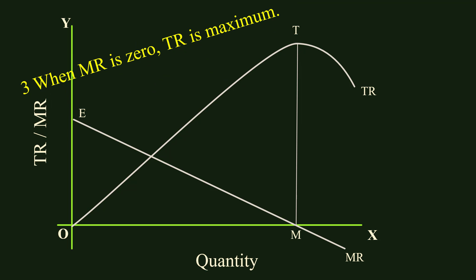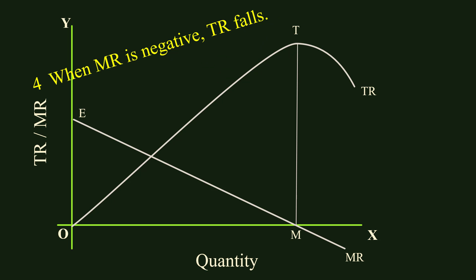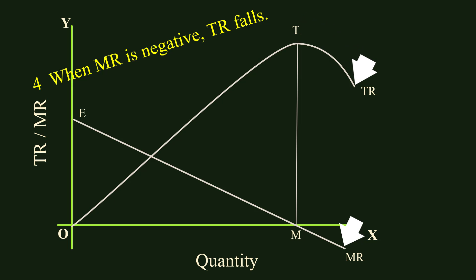Third relation: when MR is zero, total revenue is maximum. At point M, MR becomes zero. Corresponding to this, at point T on the total revenue curve, TR reaches the maximum. Fourth relation: when MR is negative, total revenue falls. In the segment of the MR curve that lies to the right of point M, MR is negative. That segment of the total revenue curve which lies to the right of T slopes downwards — total revenue in this segment is falling.